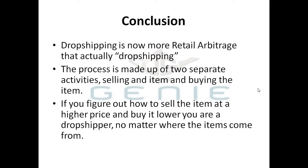To conclude: dropshipping is now retail arbitrage. The process is made up of two separate actions — selling, where you put up an item with a title at a specific price, and buying, where once it's sold you go to a retailer, purchase the item, and ship it to the buyer's address. If you figure out how to sell consistently at a higher price than you buy it for, you will make money. Take out the thought process that there's some secret place to get these items. We are focused on dropshipping on eBay, and this is definitely a solid, successful way to dropship.